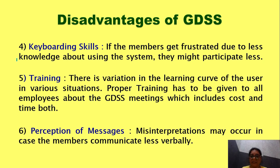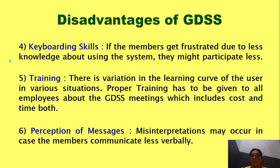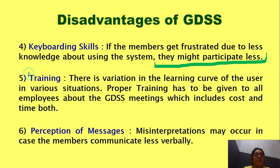The fourth disadvantage is keyboarding skills. When you have multiple members involved in a particular meeting — say 20 people — it is not possible that all of them are very good at using the software on which the GDSS meeting is being conducted, or even at using computers and shortcut keys. If they have half or limited knowledge, they can get frustrated, and such people with less keyboarding skills might participate less.